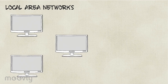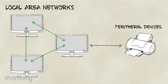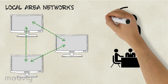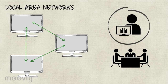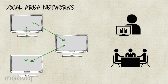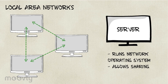First of all, local area networks. In this, computers can communicate and share information between them. They can also share peripheral devices such as printers. The computers are usually located in the same area and can be used as independent personal computers or as workstations. The workstations are connected through a server, which does multiple jobs such as running the network operating system and allows sharing to other computers.